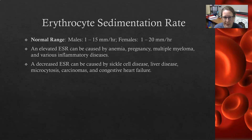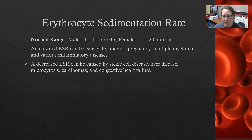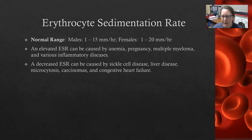An elevated SED rate can be caused by anemia — not enough red cells — pregnancy, multiple myeloma, and various inflammatory diseases. In multiple myeloma, there are a lot of antibodies floating around. Basically, it is the abundance of protein or inflammation proteins in the blood that causes the red cells to settle faster, to be heavier, and the blood simply settles faster.